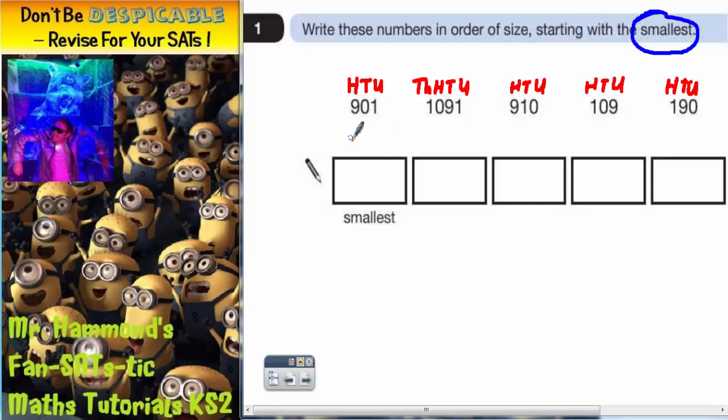So starting with the smallest, well we've got to look at the hundreds. So 901, this one's going to be the biggest one because that's the only one that goes into thousands.